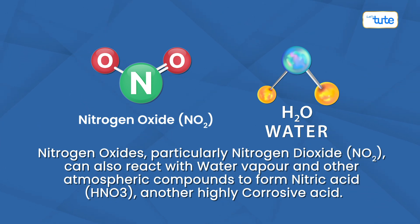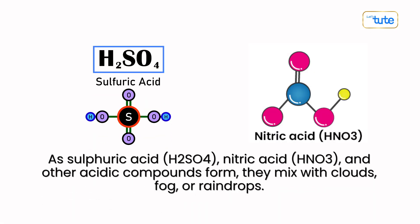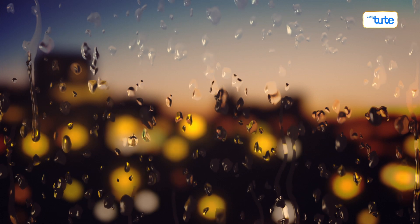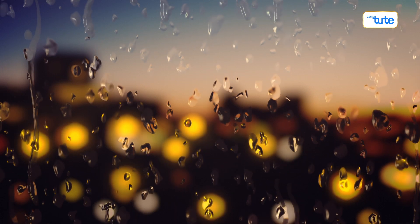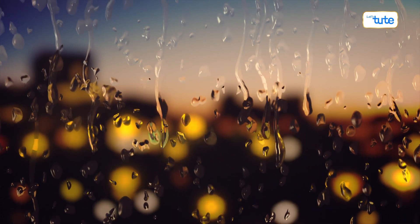Another highly corrosive acid — as sulfuric acid, nitric acid, and other acidic compounds form, they mix with clouds, fog, or raindrops. These acid droplets then fall back to the earth's surface as acid rain, snow, or dry particles.